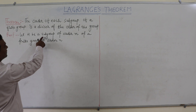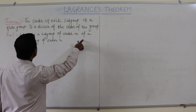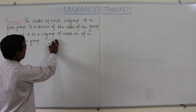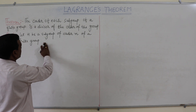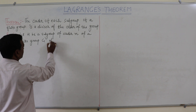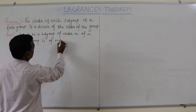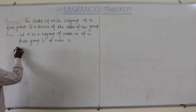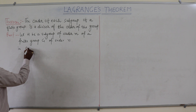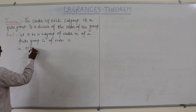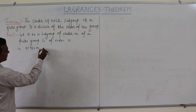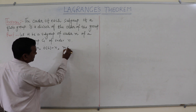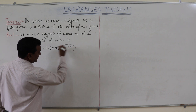Let H be a subgroup of order M of a finite group G of order N. That is to say, order of H equals M and order of G equals N, and M is less than N.